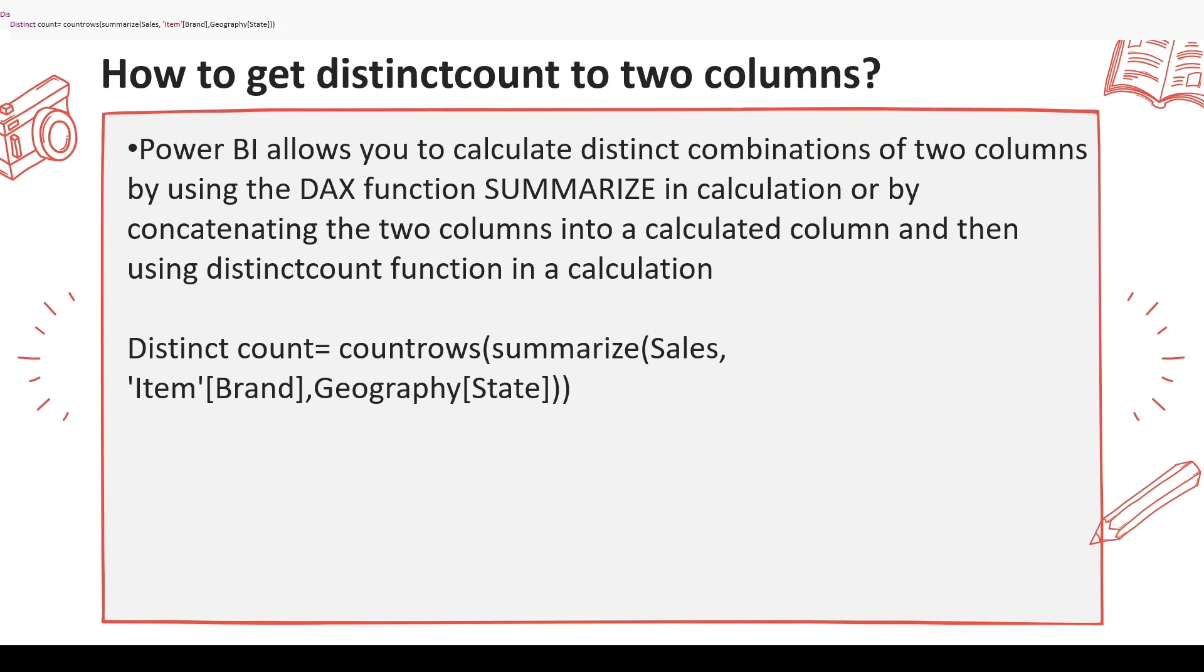So what we want to know here is how do you take distinct count of two columns. What we want is these two columns should be from two different tables. So basically, I have an Item table and a Geography table - these are two different dimensions joined with the Sales table. How do I get the distinct combination of those columns that is available?